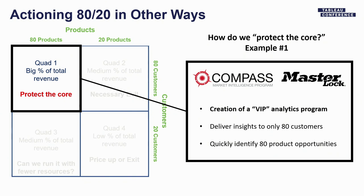We also created a VIP analytics program we call Compass at MasterLock, available to our best customers only. It involves our sales leaders and myself getting on calls, doing share-outs, or visiting customers in person, and reviewing on a regular basis how they're doing with our top products — showing them where there are opportunities to penetrate the marketplace. This is available only to top customers as an over-service mechanism.